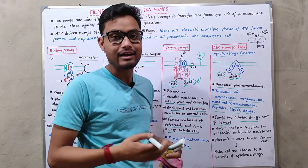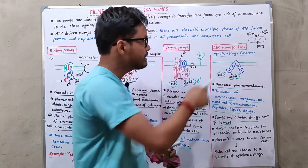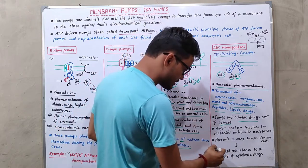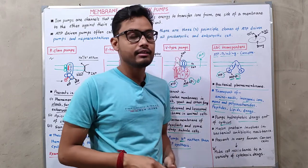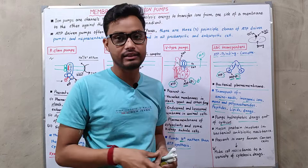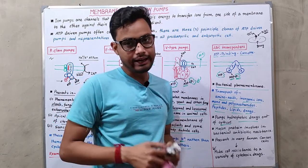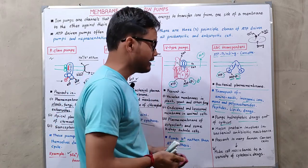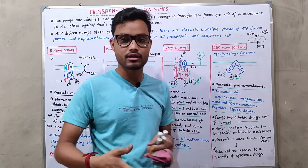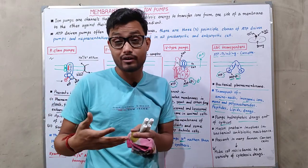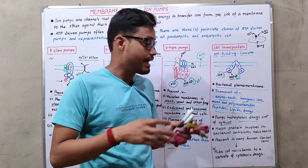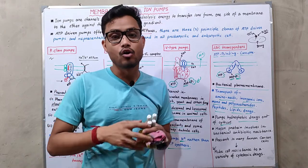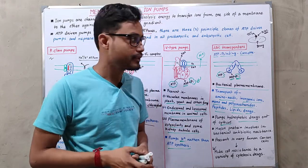ABC transporters are also found in human cancerous cells, where they make the cells resistant to a variety of cytotoxic drugs — the drugs we use to kill cancer cells. These transporters pump cytotoxic drugs from the cytosol to the extracellular matrix, creating drug-resistant properties that allow cancer cells to survive longer and sustain disease in the body.